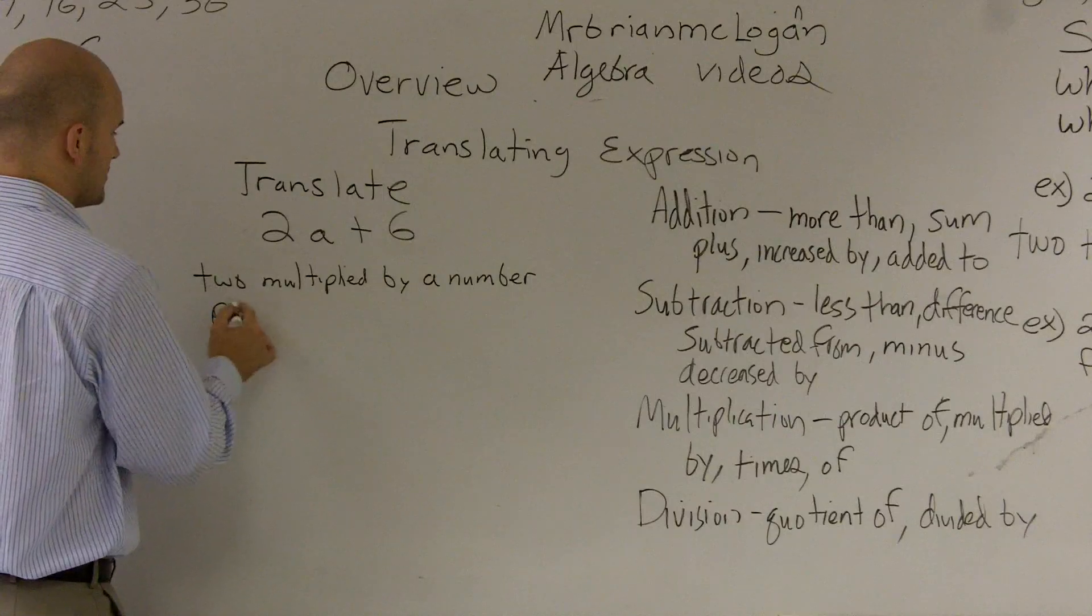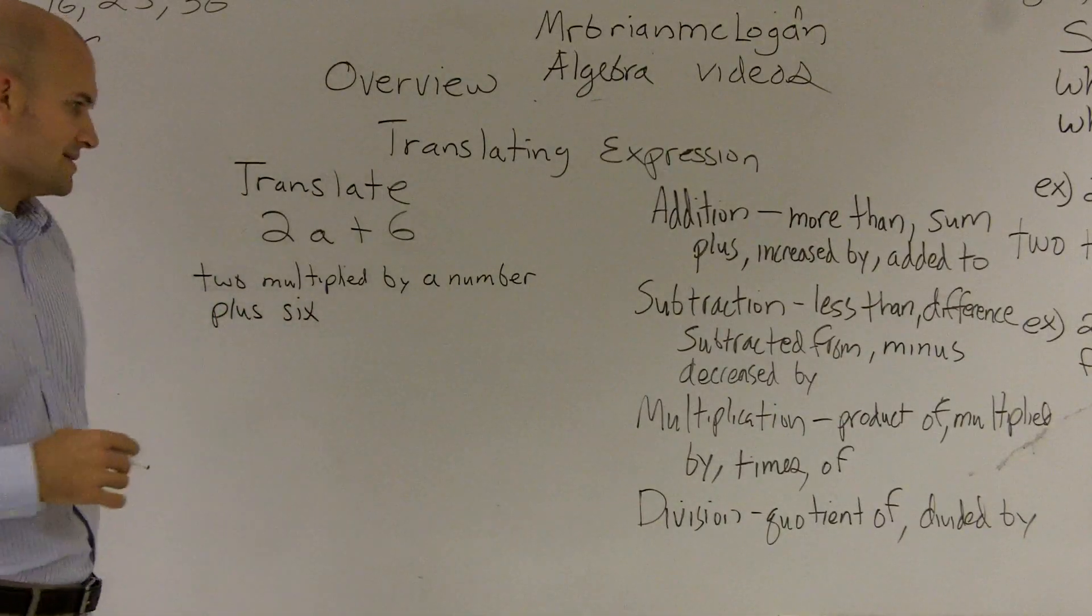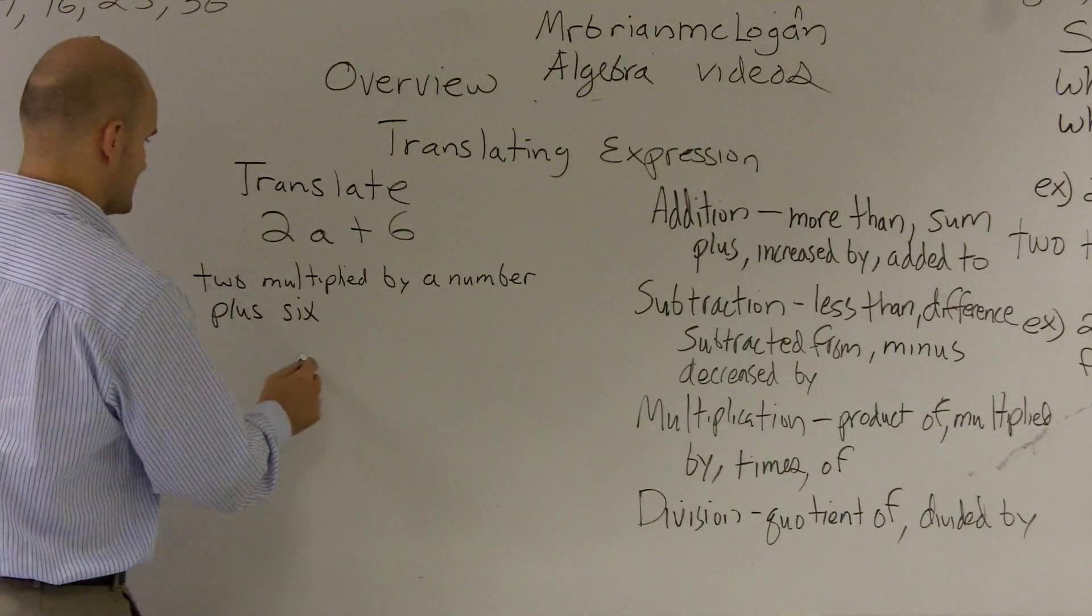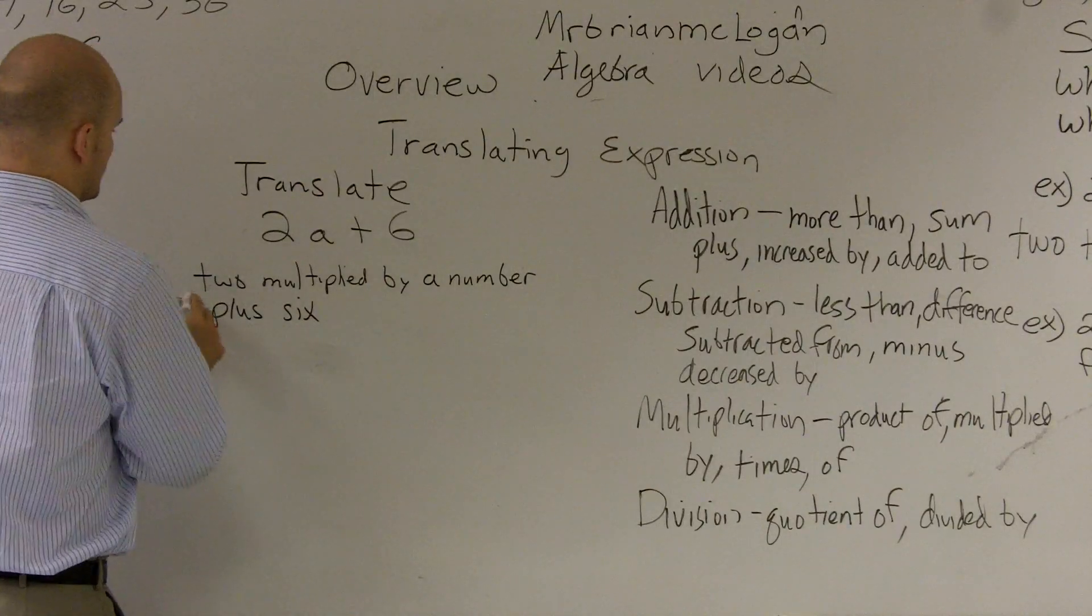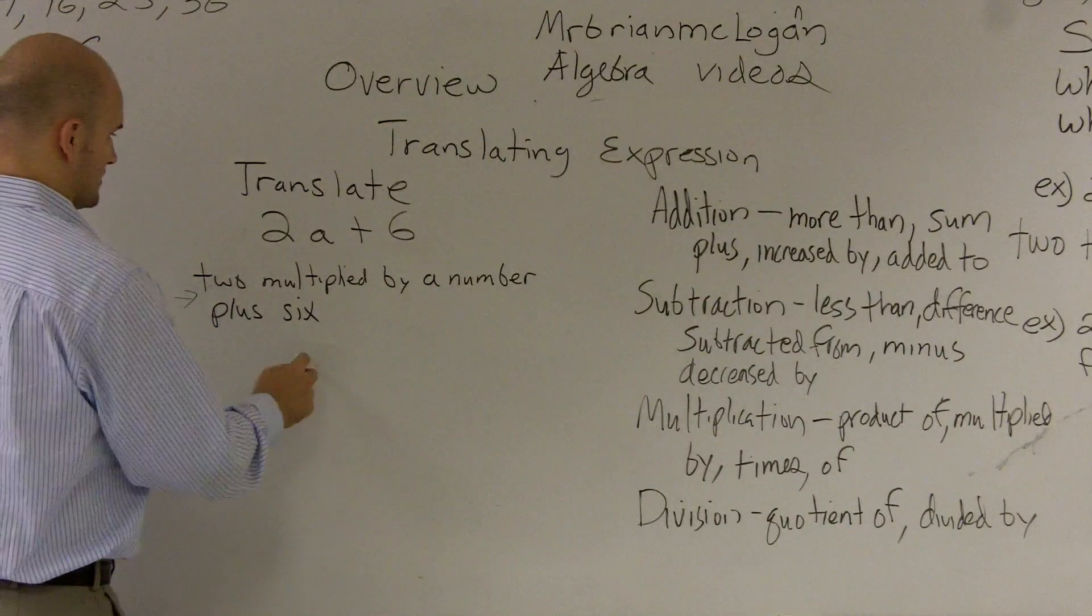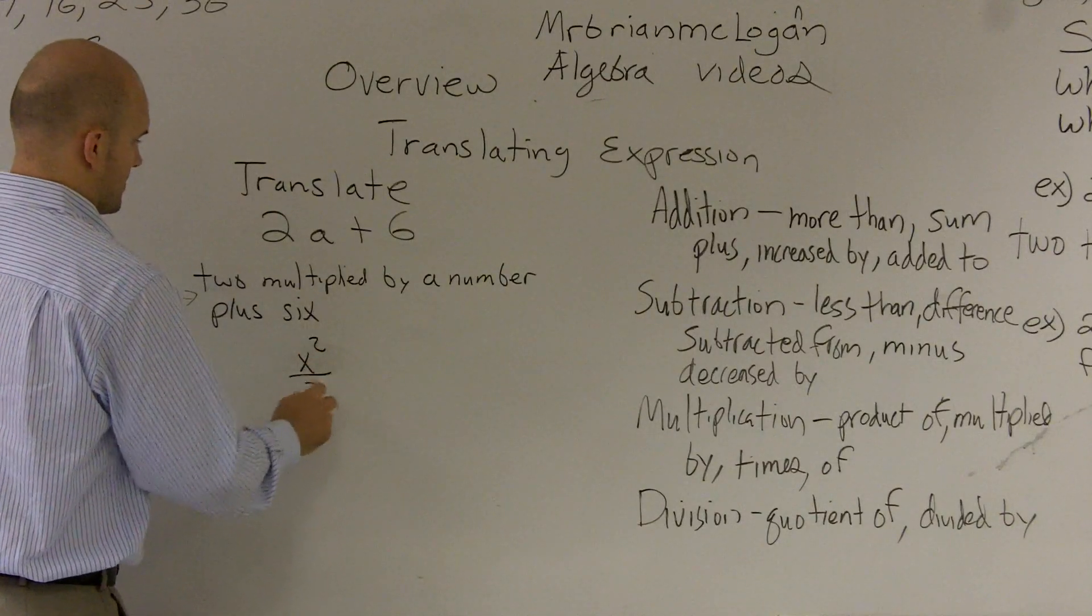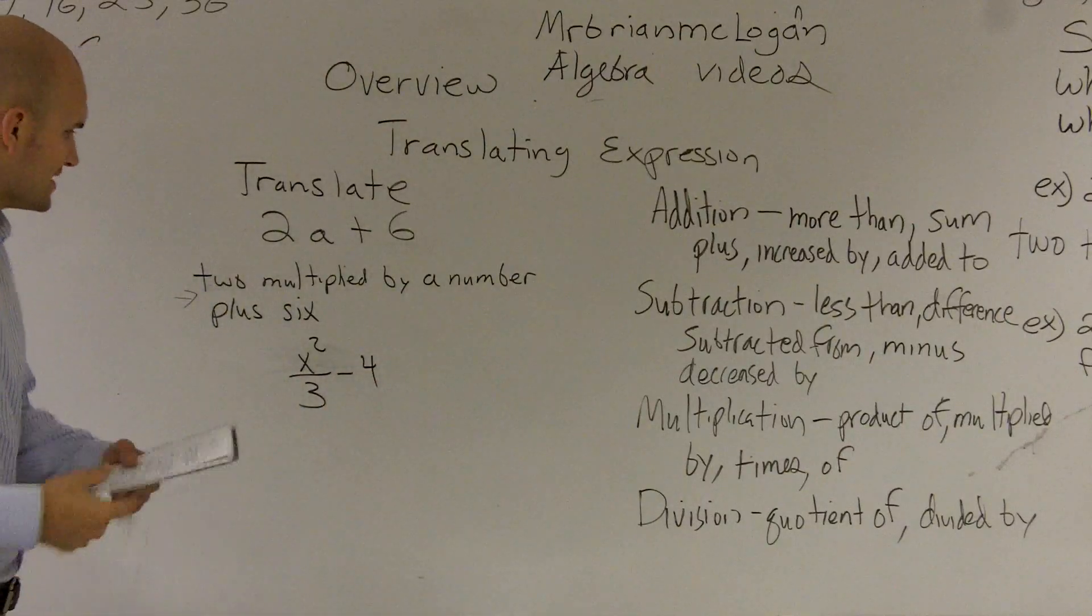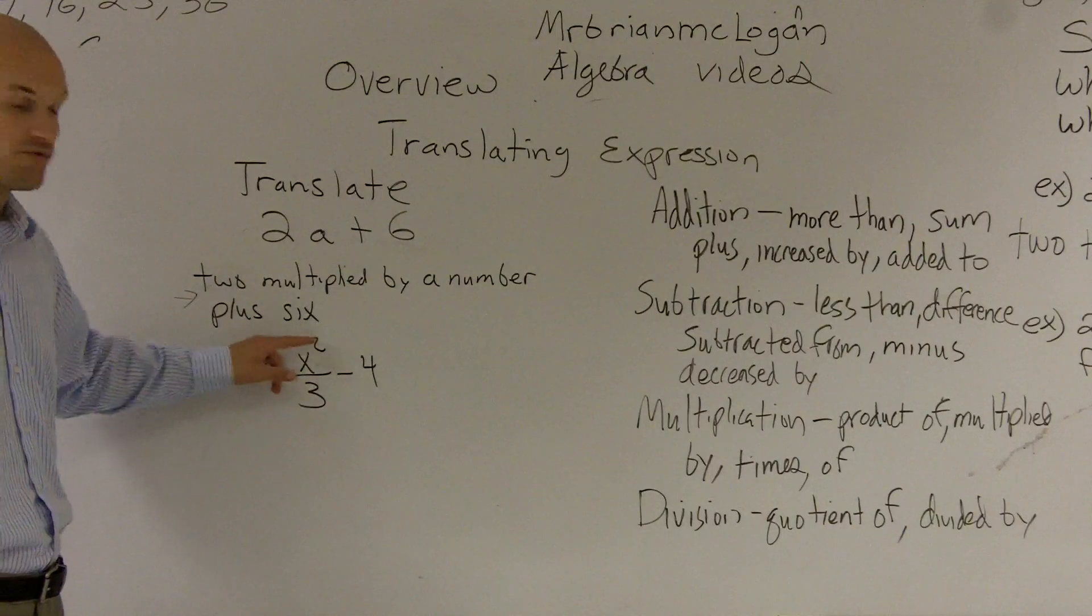So I'll say 2 multiplied by a number plus 6. The next thing I'll work on is, how about if I did a problem like this? Let's do a squared divided by 3 minus 4. If I was going to translate this to a verbal expression, first of all, I have a number. That number is raised to a power.